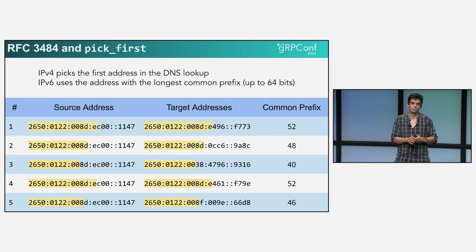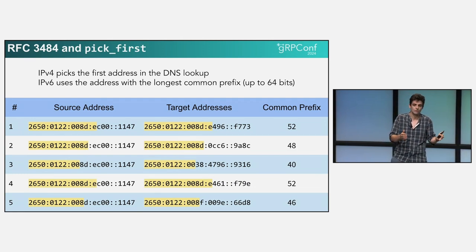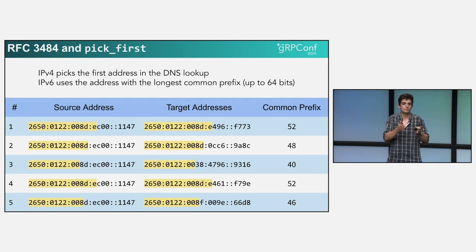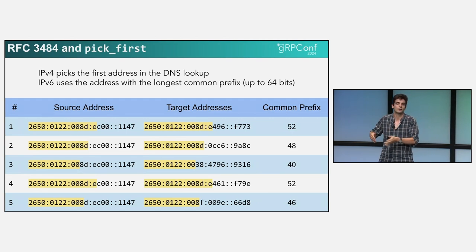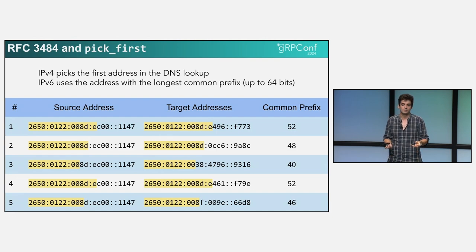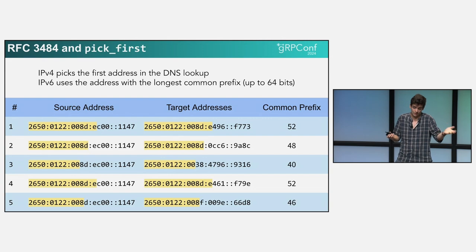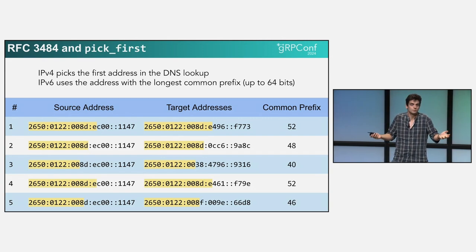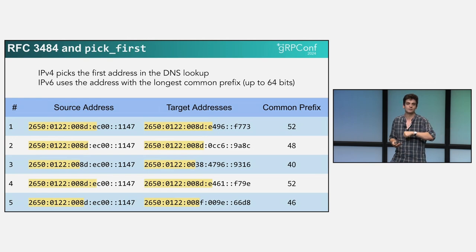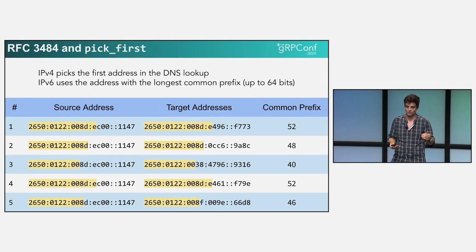This is technically good — IPv6 addresses roughly match geographical location, with each segment corresponding to continent, country, data center, rack, etc. You'd expect it to work roughly as expected. But what ends up happening is some servers are just closer than others. No matter how many times we moved them to different racks, some hosts always ended up taking significantly more traffic than the others.